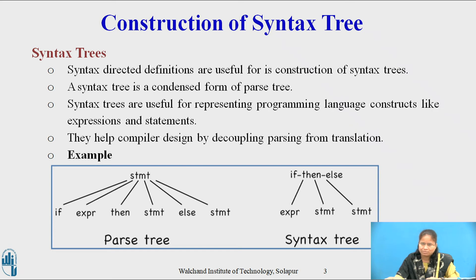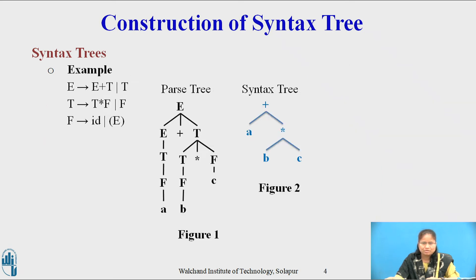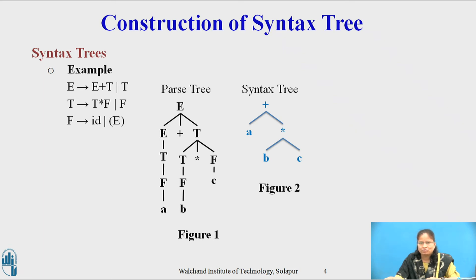The following diagram shows the parse tree and the syntax tree for the production S derives 'if expression then statement else statement'. Consider the second example: E derives E plus T or T; T derives T star F or F; F derives id or E. Figures 1 and 2 show the parse tree and the syntax tree respectively for the expression a plus b into c. Leaf nodes for the operators and keywords do not appear as leaves but are associated with the interior node that would be the parent of those leaves in the parse tree. Internal nodes corresponding to uninformative non-terminals are replaced by more meaningful operators. Syntax directed translation can be used on syntax trees as well as parse trees.